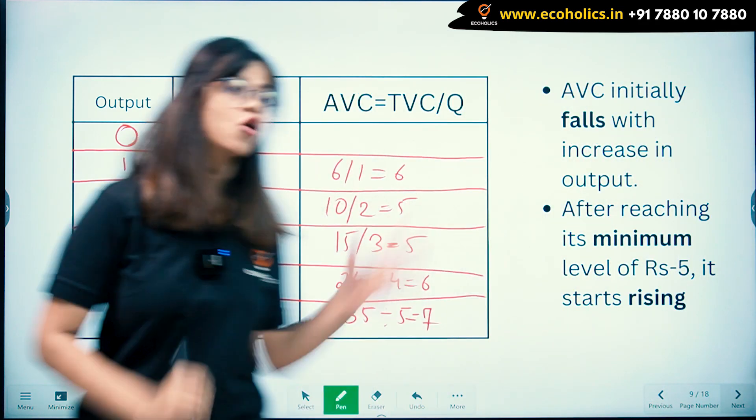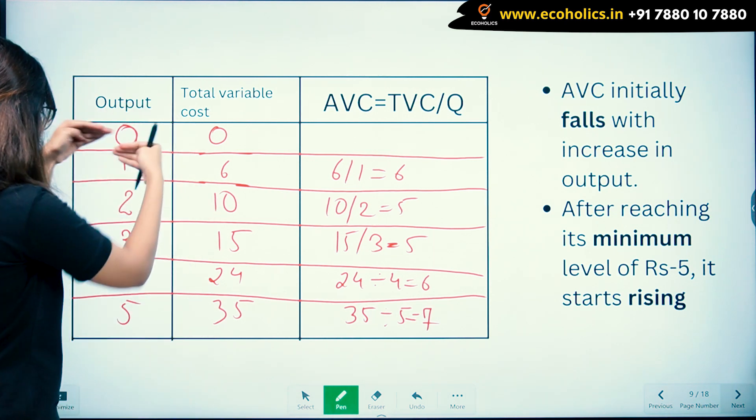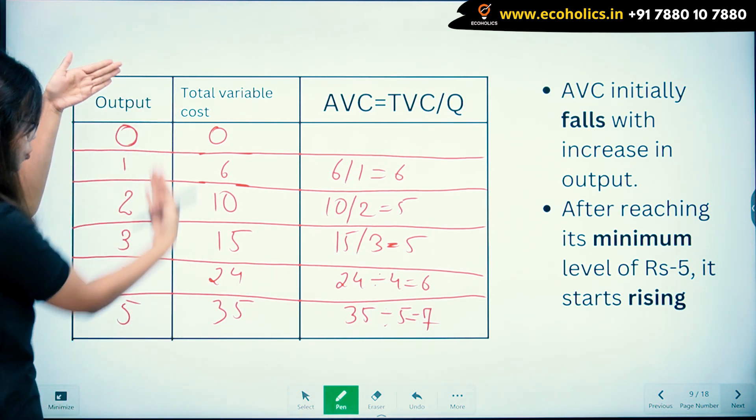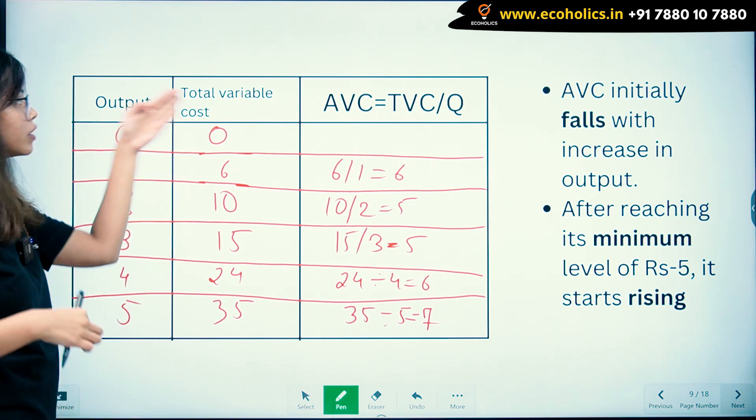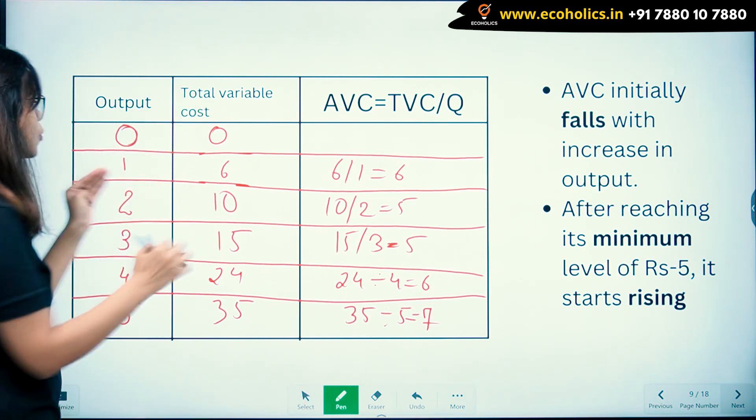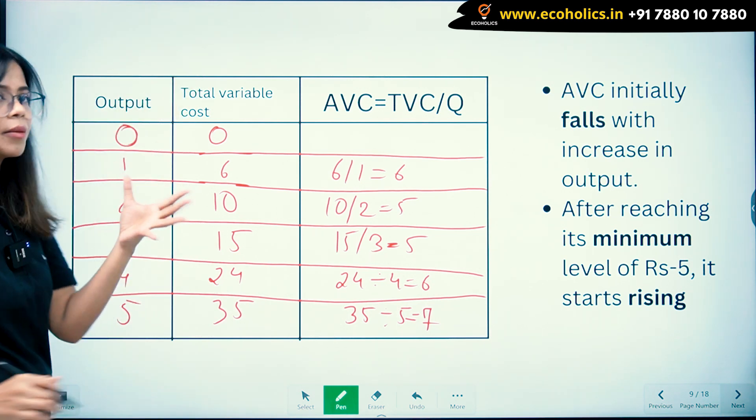So we have output here—the output is 0, 1, 2, 3, 4, 5. The output goes on increasing, and the total variable cost, that is your TVC. So when output is 0, what will be your total variable cost? Will it be a number?